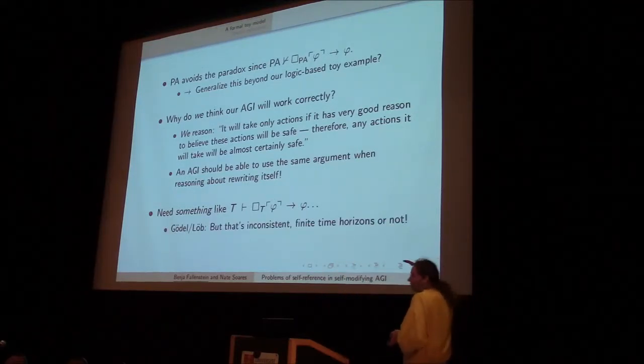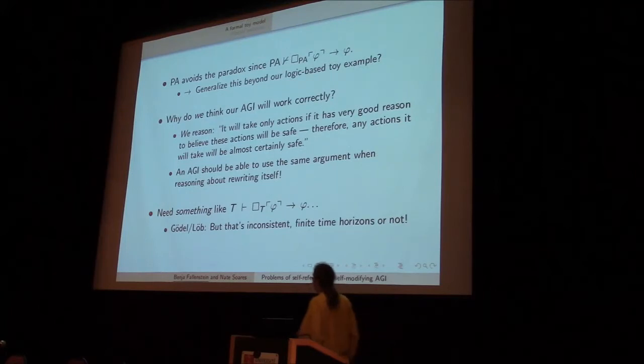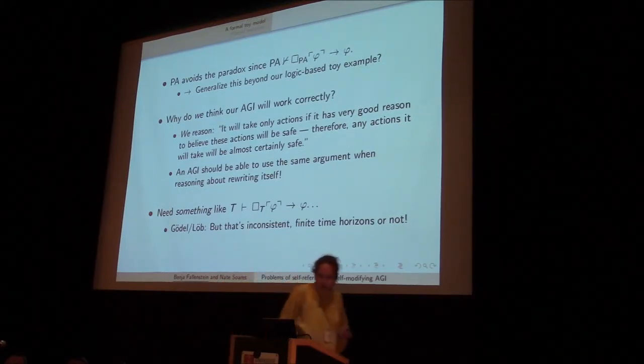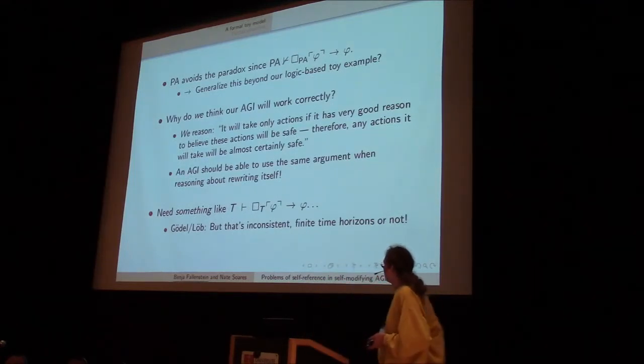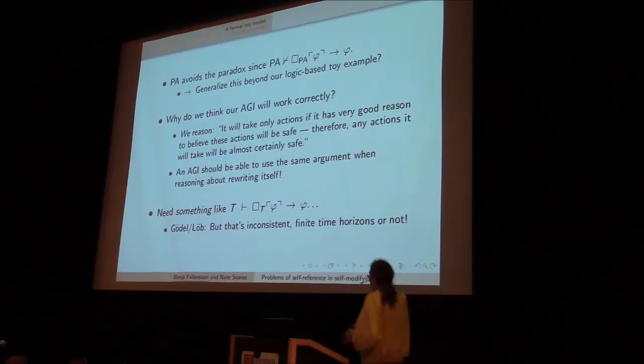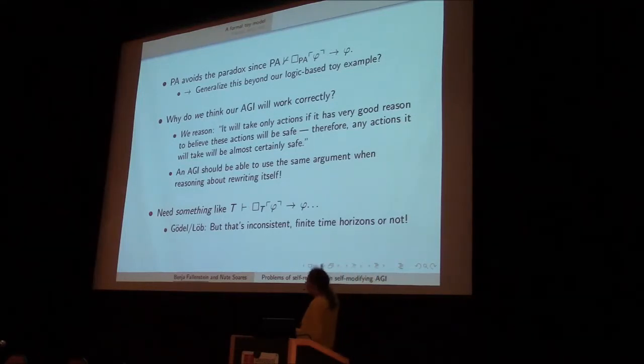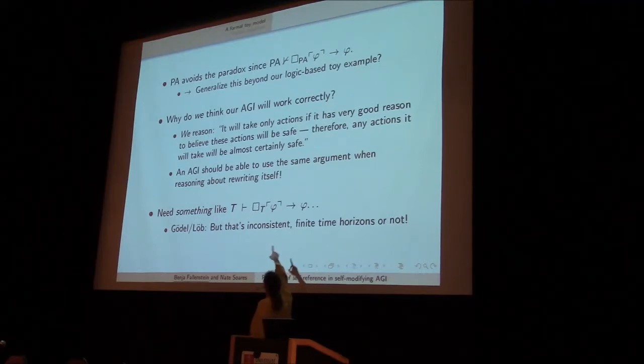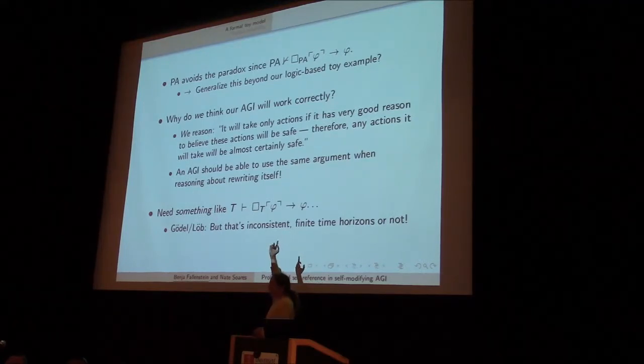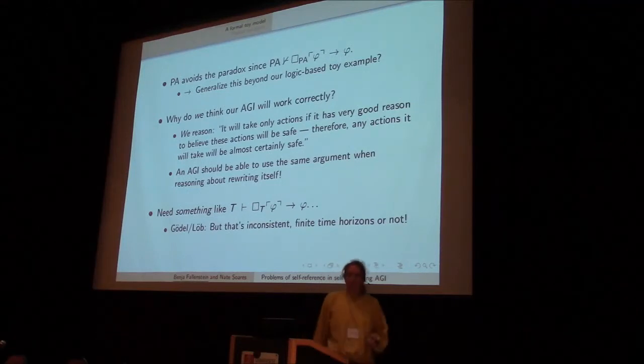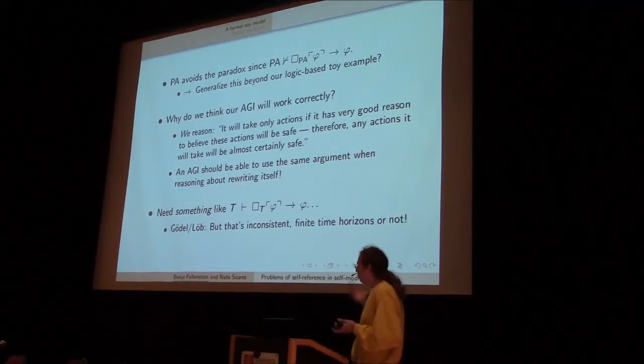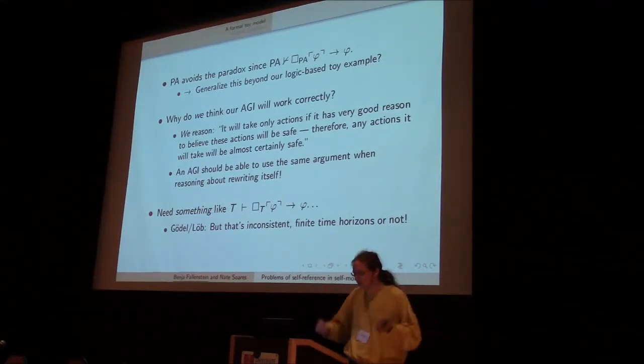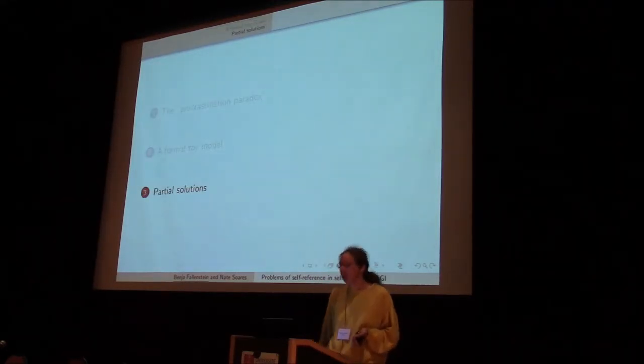And now in the context of this logical toy model, we run into the problem that by Gödel's theorem, by Löb's theorem, which is a variation, this turns out to be inconsistent. A theory can't know that itself is consistent, and this would say that if T proves a falsehood, then a falsehood is true, so T doesn't prove a falsehood. So this is inconsistent with Gödel's theorem whether we have finite time horizons or not, that doesn't enter into it. If you have this, then you can prove that everything is safe.